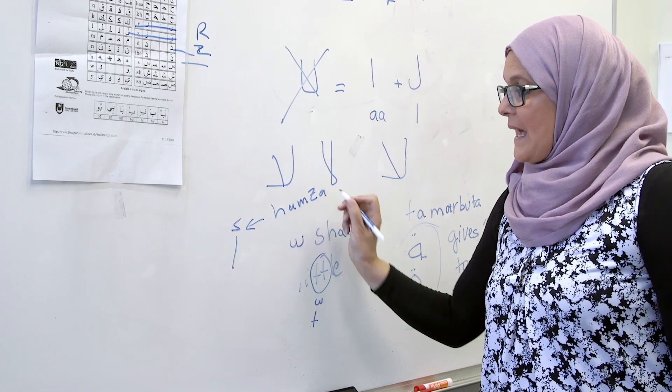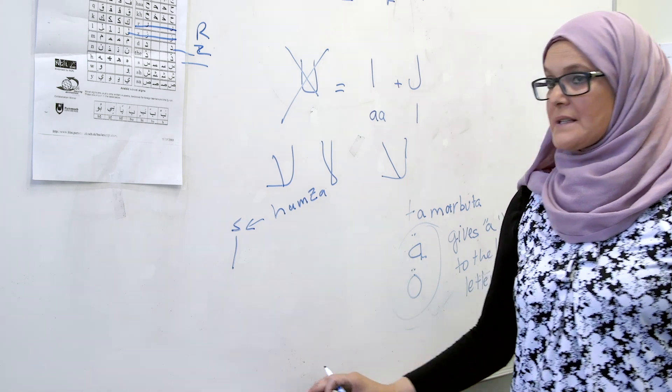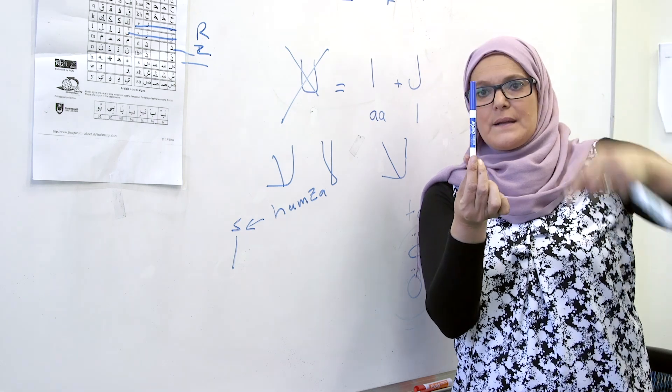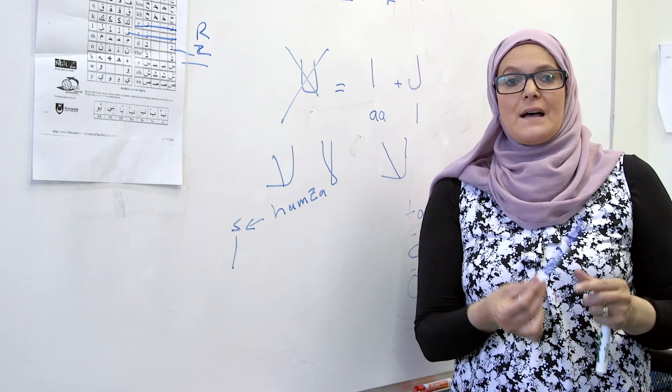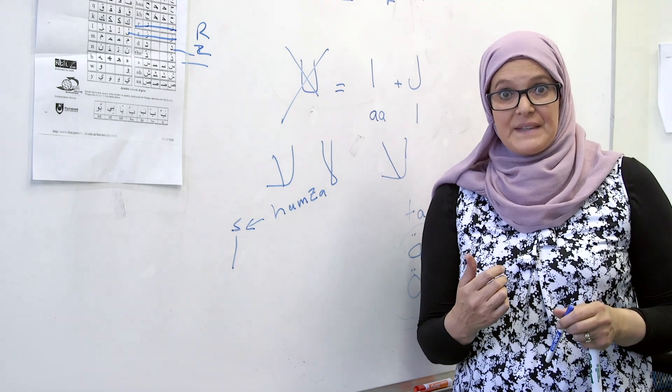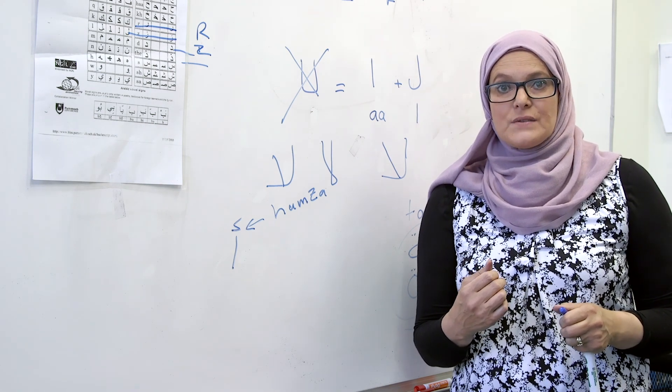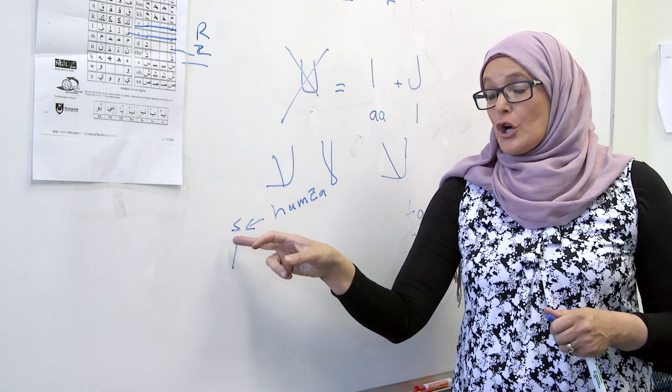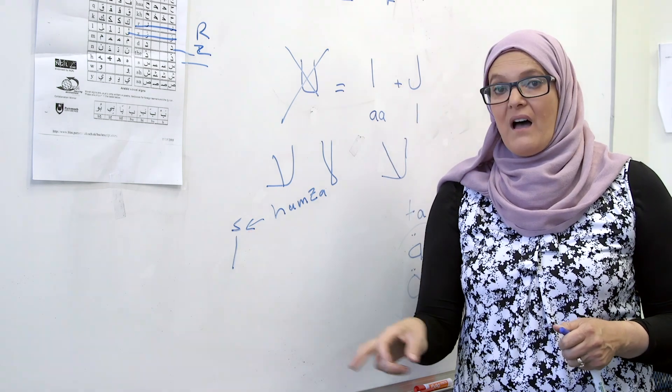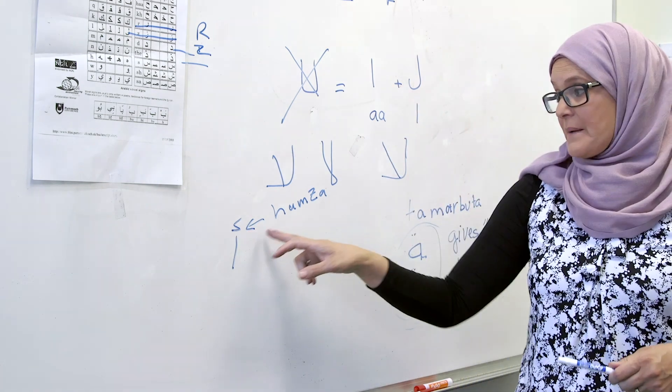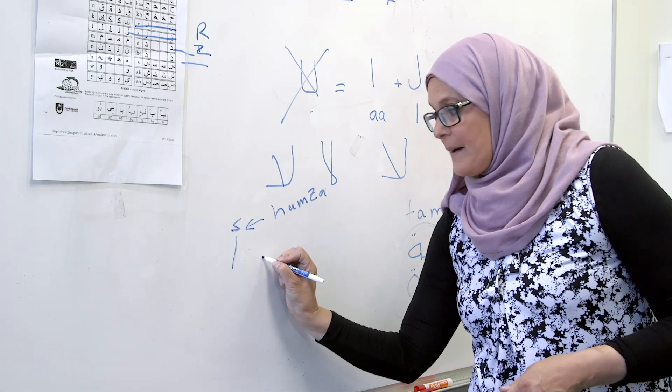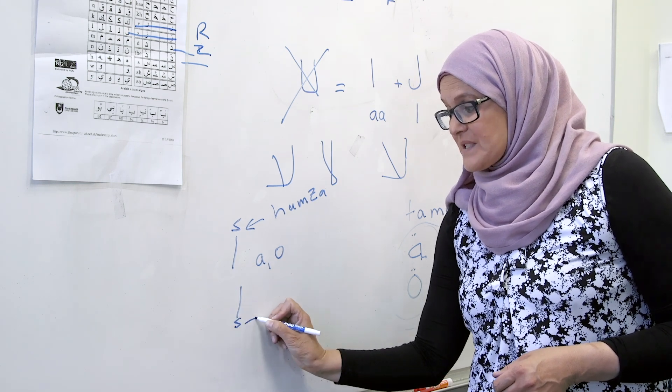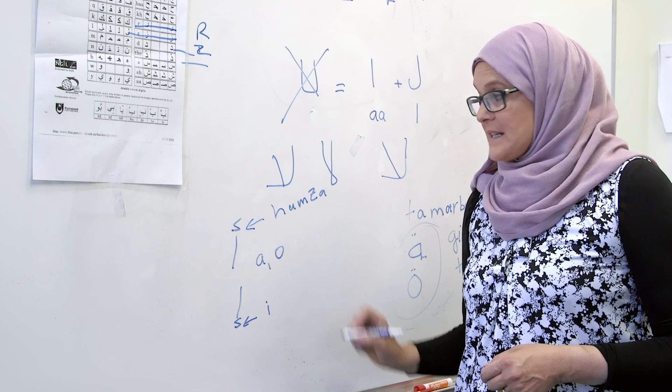Hamza is something you can put - imagine your aleph like that and your hamza is the red one. This is called hamza and it makes the glottal stop, like 'a'. When you're talking, you say a, a, a. This makes it not a vowel but a consonant. If you see the hamza on top, read it 'a' or 'o'. If you see the hamza in the bottom, it makes the sound 'e'.